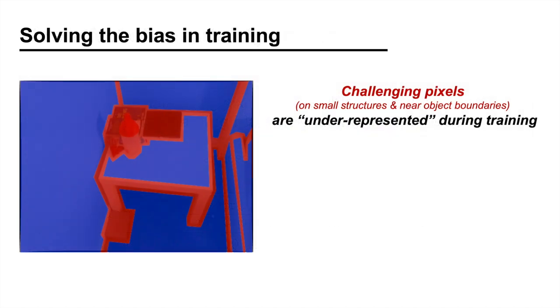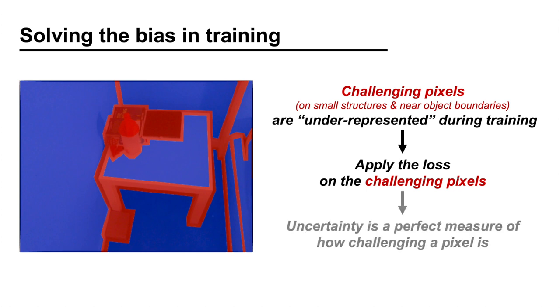So, how can we solve this problem? A straightforward solution can be to apply the loss specifically on the challenging pixels. Since the training objective was to assign high uncertainty when it is difficult to reduce the error, the uncertainty is a perfect measure of how challenging a pixel is. Therefore, we will apply the training loss on a subset of pixels selected based on the uncertainty.